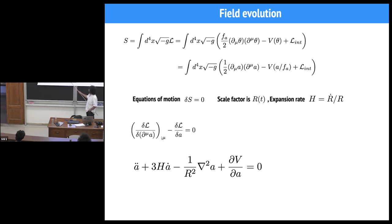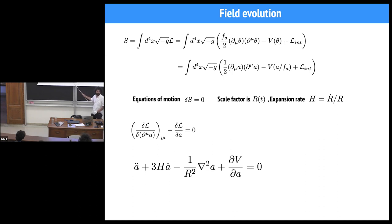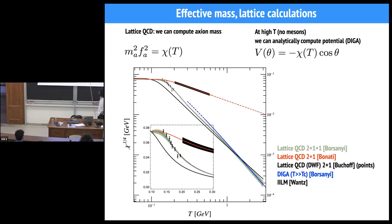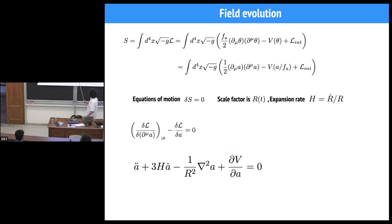This equation has a couple of particularities. One of them is that it has a friction term for the axion field that is proportional to the expansion rate of the universe. The Laplacian here is divided by the scale factor, because this Laplacian is taken with respect to co-moving coordinates and not physical coordinates. And then here we have the derivative of the QCD potential, which is the only potential that acts on the axion field.